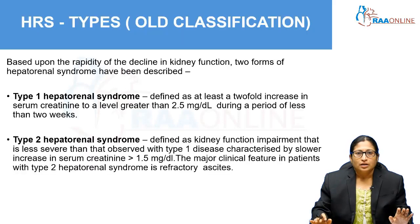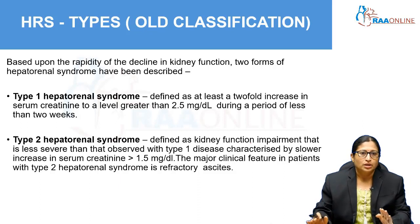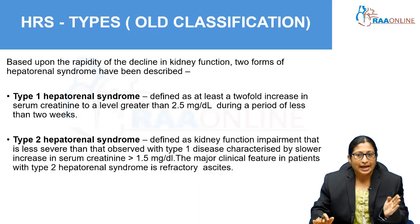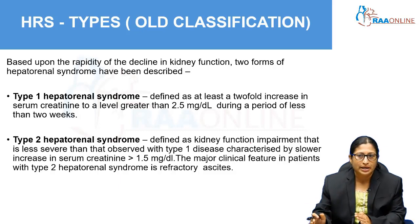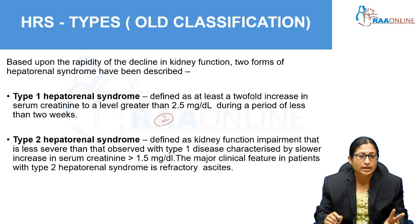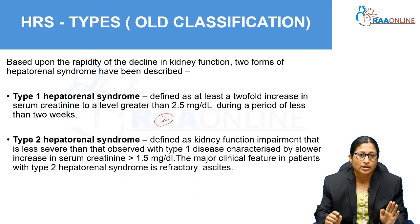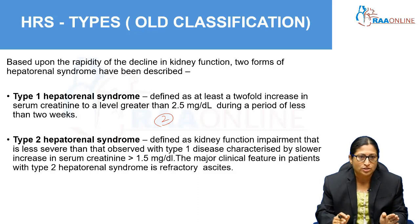We will discuss this in detail. The old classification still holds good. Previously, HRS was classified as Type 1 and Type 2 based on the rapidity of decline of kidney function. Type 1 HRS is characterized by very rapid progression of renal dysfunction — at least a two-fold increase in serum creatinine to a level of more than 2.5 mg/dL in a period of less than 2 weeks. Remember the magic number 2 for the definition of Type 1 HRS.